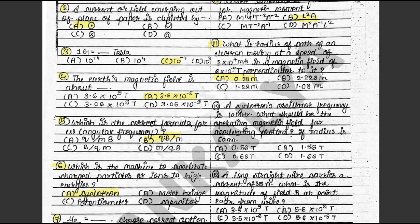Question 12: A cyclotron's oscillator frequency is 10 MHz. What should be the operating magnetic field for accelerating protons if the radius is 600 meter? The answer is C: 0.66 Tesla. This is in the textbook illustration 4.